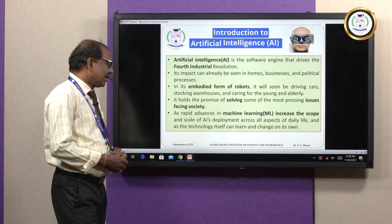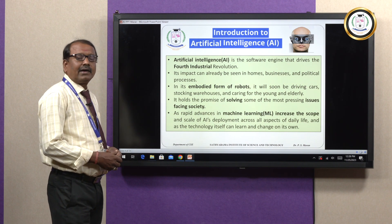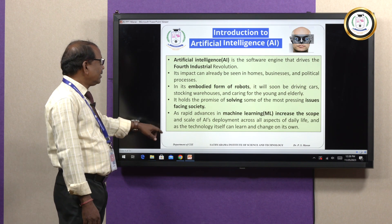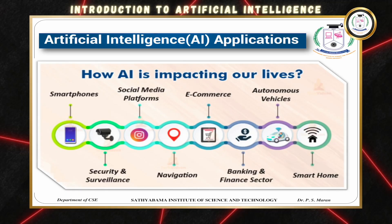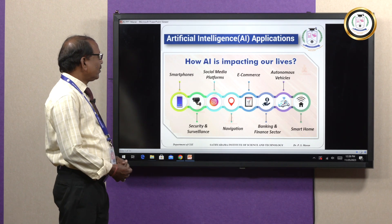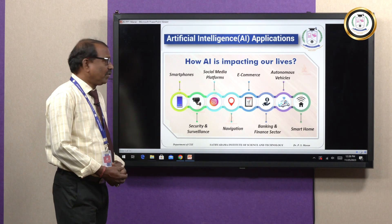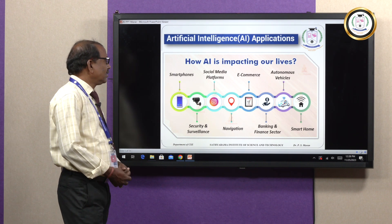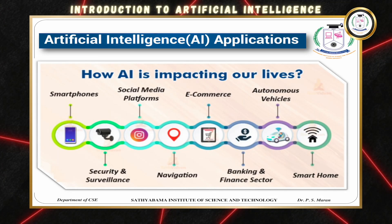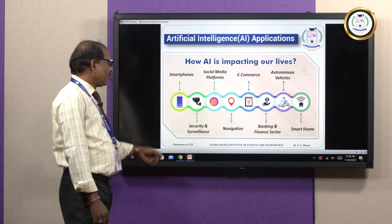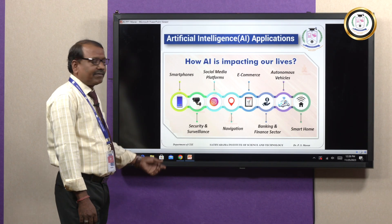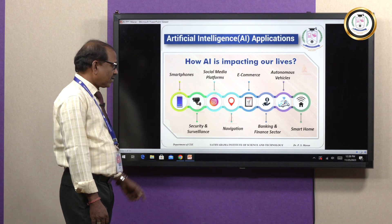How is AI impacting our lives? In recent years, AI impacts many things in human life — for example, smartphones, social media platforms, e-commerce and autonomous vehicles, security and surveillance, navigation, banking and finance sector, and the smart home. We are going to see each and every application briefly.